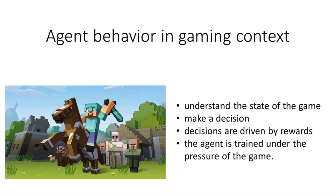The cool thing about a gaming situation is that the behaviour of the agent is trained under the pressure of the game. Think of a character or a bot in a game — it has to understand the state of the game and where the players are, then based on this observation make a decision. For example, it could learn what to do when it's being attacked, or how to behave in order to reach a specific goal.